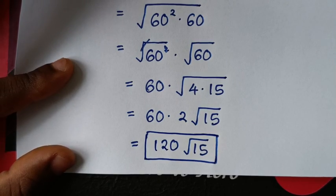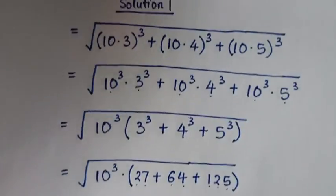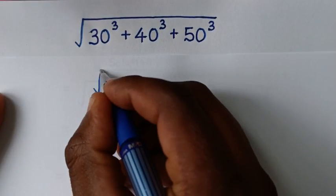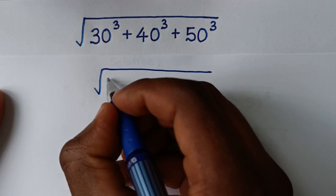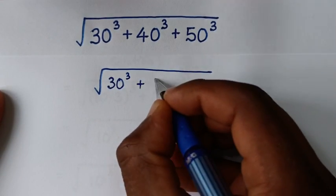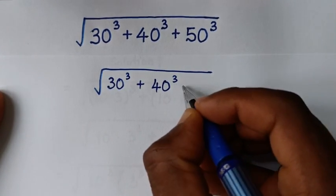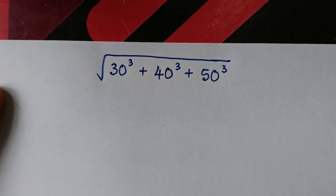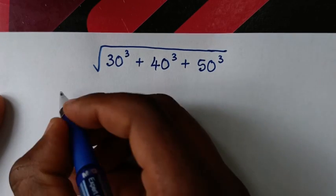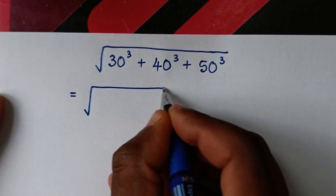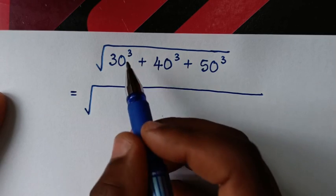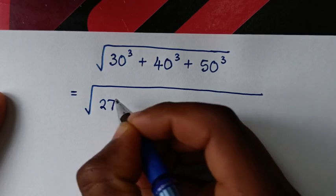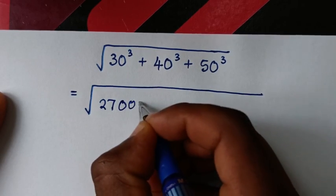Therefore the final answer is 120 square root of 15. Now to solve by another method, we call this Method 2. We write the same problem: the square root of 30 to the power 3 plus 40 to the power 3 plus 50 to the power 3. For Method 2, we directly compute 30 to the power 3: 3 to the power 3 is 27, and there are three zeros.